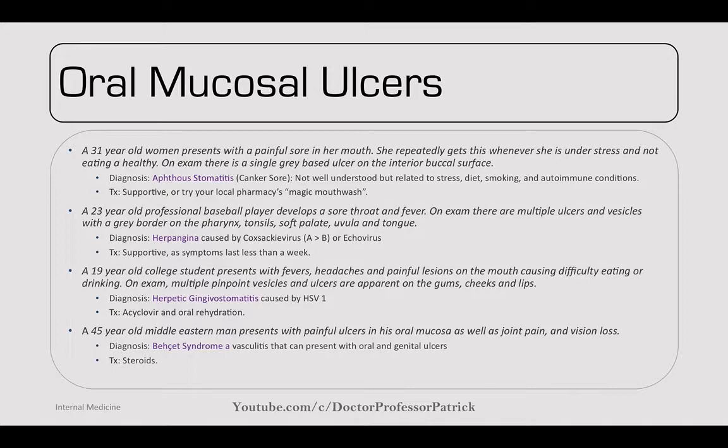A 19-year-old college student presents with fevers, headaches, and painful lesions on the mouth causing difficulty eating and drinking. On exam, there are multiple pinpoint vesicles with ulcers on the gums, cheeks, and lips. This is herpetic gingivostomatitis caused by herpes simplex 1. You can treat with acyclovir and oral rehydration. The gingivostomatitis is more in the anterior of the mouth, and herpangina is more in the posterior pharynx.